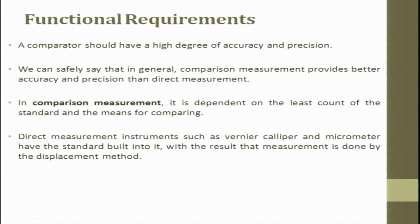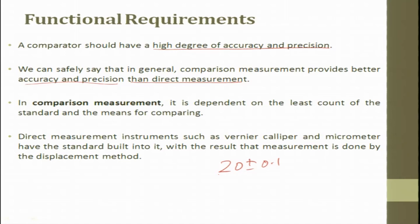A comparator must have a high degree of accuracy and precision. We can safely say that comparison measurement generally provides better accuracy and precision than direct measurement, because here we are not worried about the nominal 20 mm — we are only worried about the small deviation. This small measurement can be easily done because it will be magnified when reading. A comparison measurement also depends on the least count of the standard and the means for comparison.